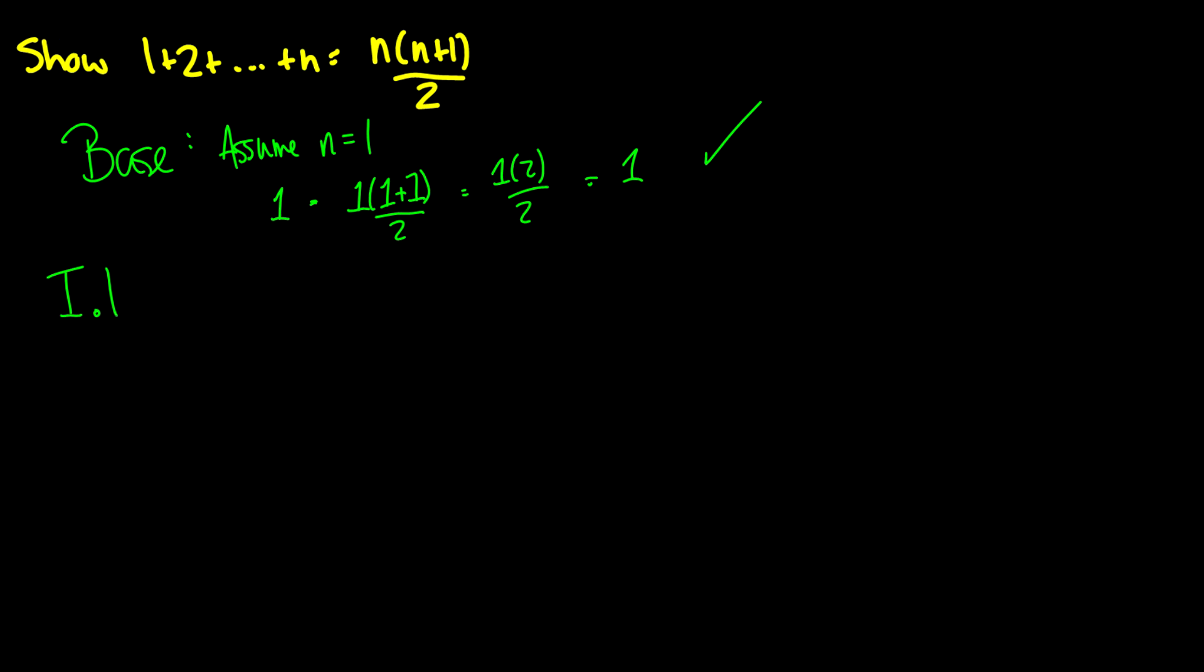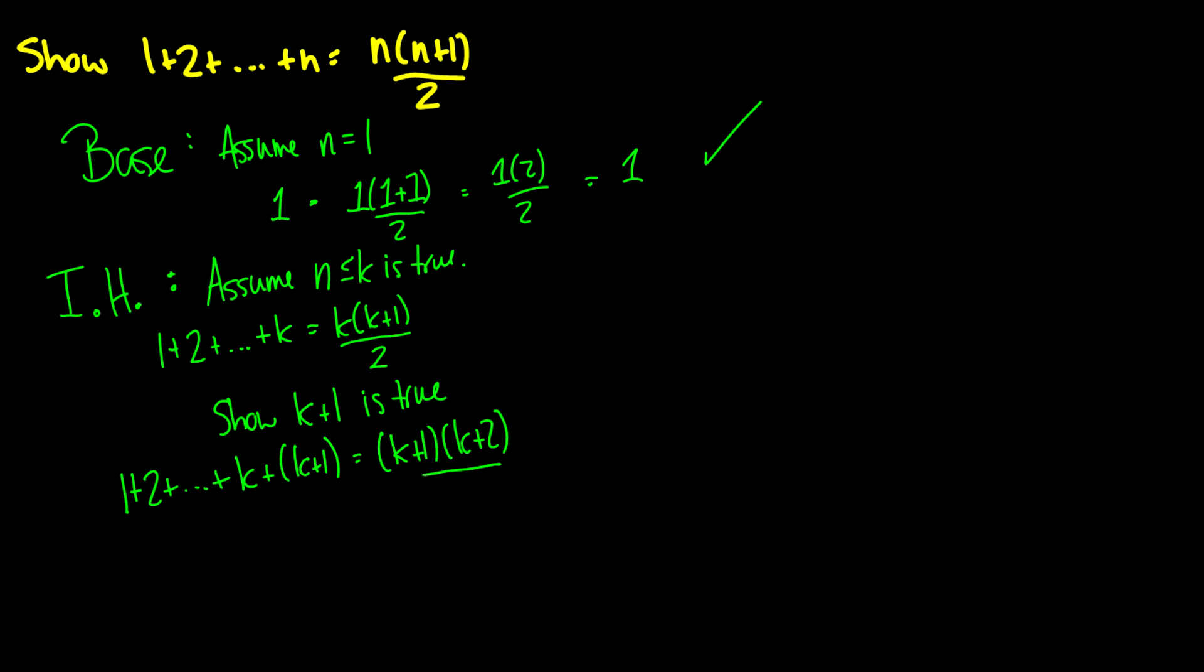Now the inductive hypothesis is where people get a little bit tripped up the first time. So what I do is I say assume n less than or equal to k is true. So what this means is that 1 plus 2 plus all the way up to k is equal to k times k plus 1 over 2. Okay, so now I have to show that k plus 1 is true. So what does this involve? Now essentially we're going to go one step further. All I did here was I put in k plus 1 for k. That's all I did.